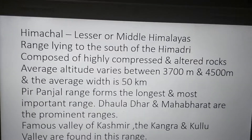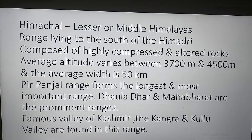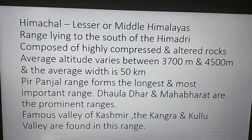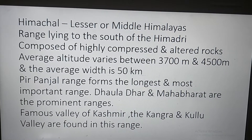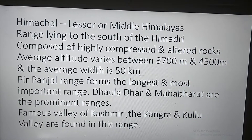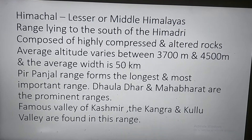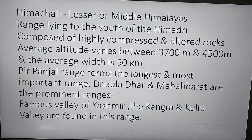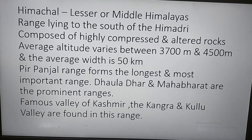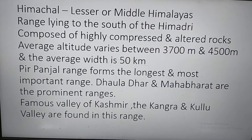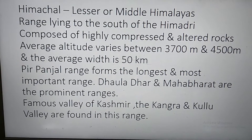Let us recap about Himachal. They are known as Lesser or Middle Himalayas. This range lies to the south of the Himadri and is composed of highly compressed and altered rock. Average altitude varies from 3,700 meters to 4,500 meters and average width is 50 kilometers. The Pir Panjal range forms the longest and most important range. Dholadhar and Mahabharat are prominent ranges, and famous valleys such as Kashmir, Kangra, and Kulu are found in this range.